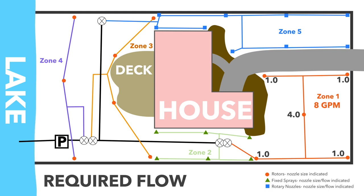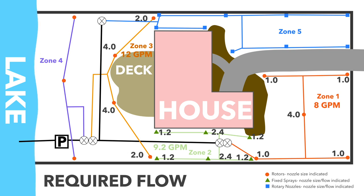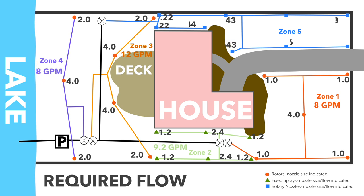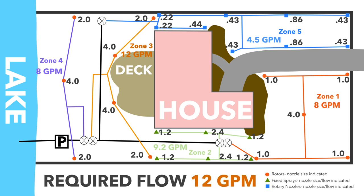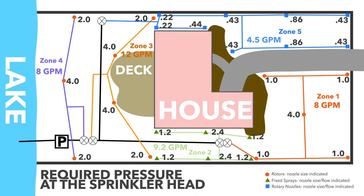Zone 2 has six fixed sprays totaling 9.2 GPM. Zone 3 has four rotors totaling 12 GPM. Zone 4 has three rotors totaling 8 GPM. Zone 5 has 10 rotary nozzles totaling 4.5 GPM. Zone 5 looks like the biggest zone when counting heads, but it's actually the smallest by flow rate. We base our flow rate on Zone 3, which uses 12 GPM — so the required flow rate for this system is 12 GPM.